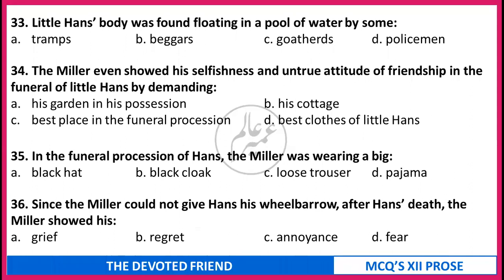Little Hans' body was found floating in a pool of water by some (a) tramps, (b) beggars, (c) goatherds, (d) policemen. The Miller showed his selfishness in the funeral of little Hans by demanding (a) his garden, (b) his cottage, (c) best place in the funeral procession, (d) best clothes of little Hans. In the funeral procession of Hans, the Miller was wearing a (a) big black hat, (b) big black cloak, (c) loose trouser, (d) pajama. Since the Miller could not give Hans his wheelbarrow after Hans' death, the Miller showed his (a) grief, (b) regret, (c) annoyance, (d) fear. Correct answers: 33 - goatherds. 34 - best place in the funeral procession. 35 - black cloak. 36 - annoyance.